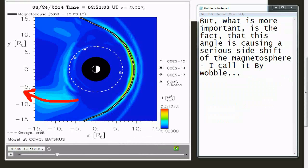But what is more important is the fact that this angle is causing a serious side shift of the magnetosphere. I call it BY-wobble.